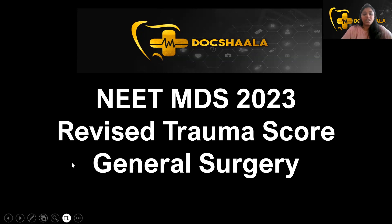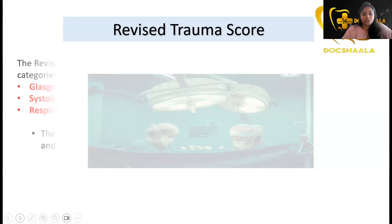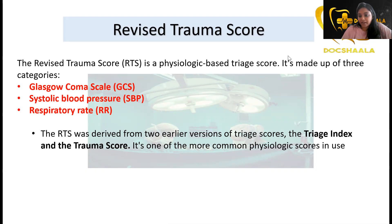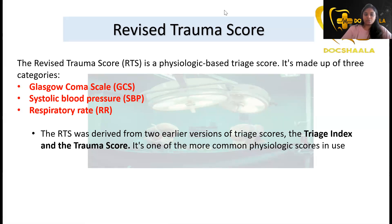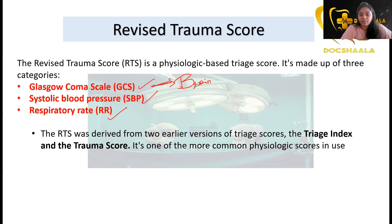The Revised Trauma Score is a physiologic-based triage score, used at mass casualty triage camps. It is made up of three categories: Glasgow Coma Scale, systolic blood pressure, and respiratory rate. The Glasgow Coma Scale evaluates the brain activity of the patient on site.